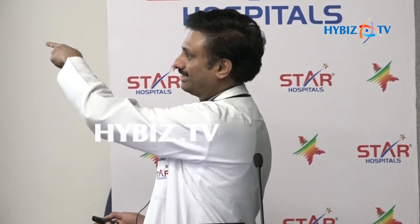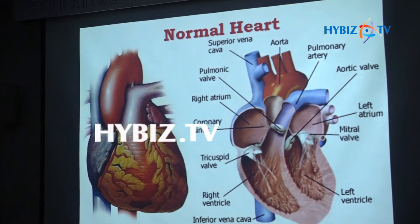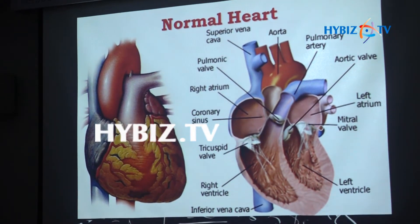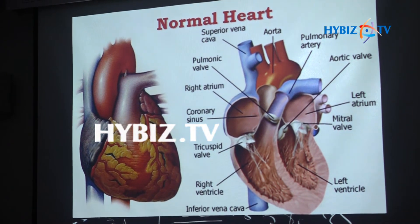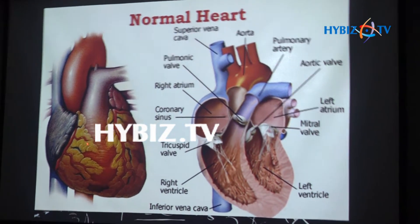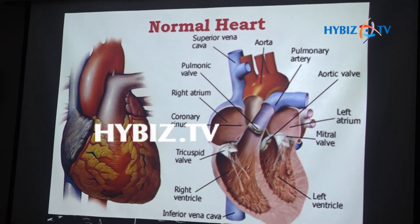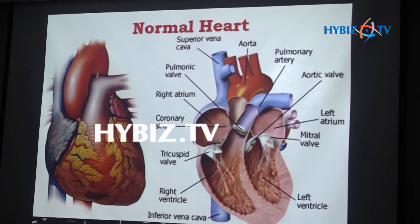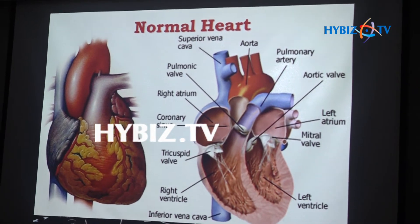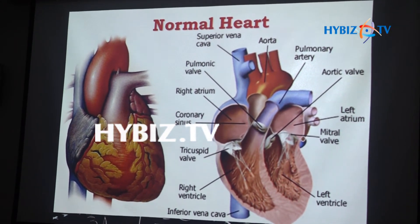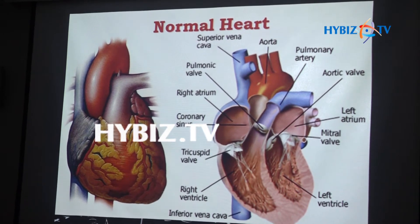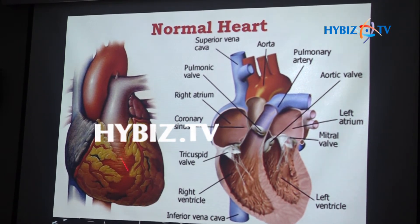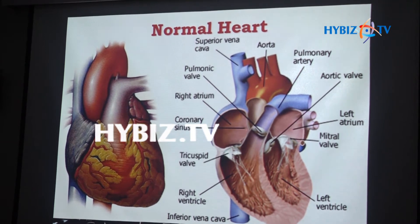To understand what heart disease is like, the basic structure of the heart should be understood. This is how a normal heart looks if you open the chest. The size of the heart is almost the size of a fist. People who are big or small in terms of physical structure — the size of the heart also varies accordingly.